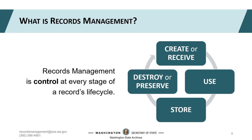The last stage in a record's life cycle is destruction or preservation. The best part of destroying non-archival records and transferring archival records is that you and your agency are no longer responsible for that material. At that point, you can point to the DAN that gives you the authority to destroy or transfer those records. The measurable decrease in records volume will increase your job satisfaction. When you can find what you want when you need it, you can focus on the parts of your job that bring you joy.